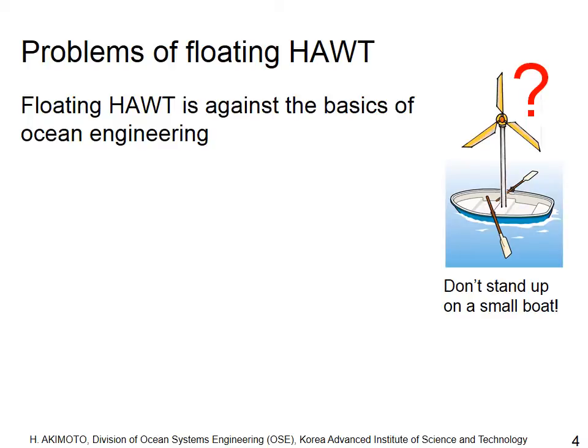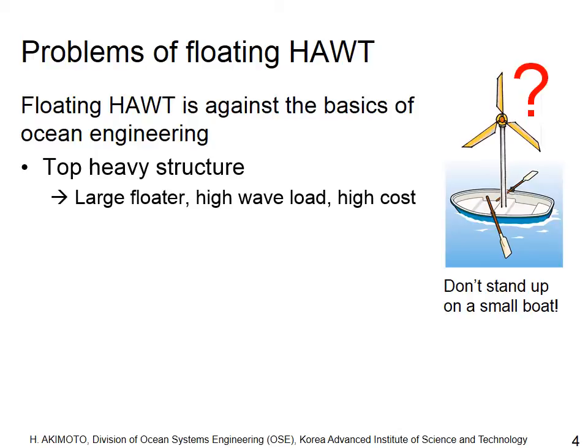At present, the mainstream concept of floating offshore wind turbines is the horizontal axis wind turbine, mainly because they have been quite successful in onshore applications. However, the floating horizontal axis wind turbine is against the basics of ocean engineering and naval architecture — it is a top-heavy structure. The main electromechanics are on top of a high tower, and to keep its upright position offshore, we need a large floater system.